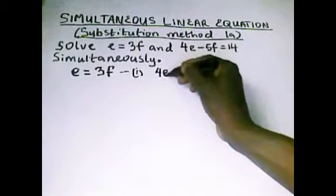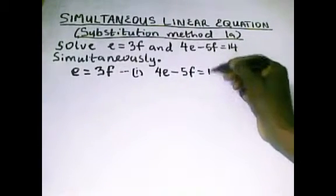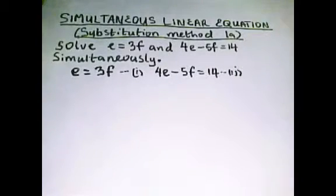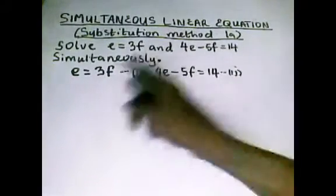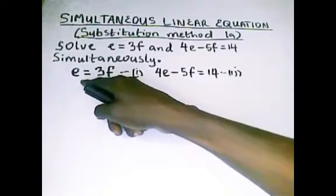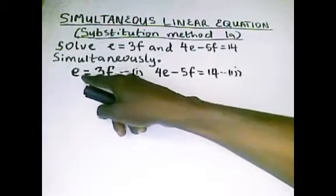Let's call this equation 2. Now under the substitution method, we are to take what we have here. You can see that e is already a subject on its own; it is standing on its own. So we are to replace e.